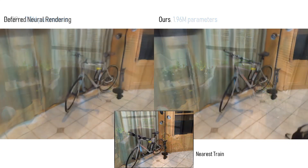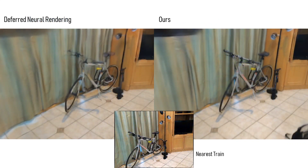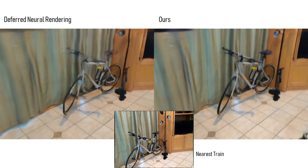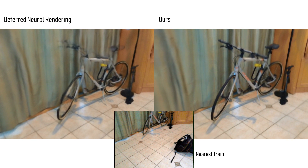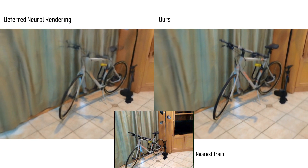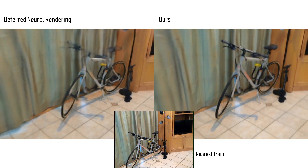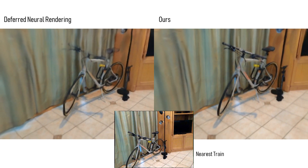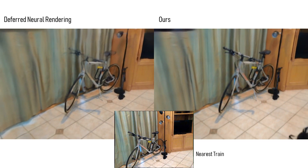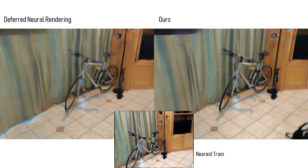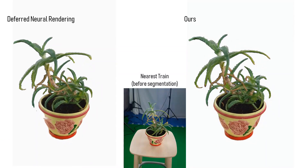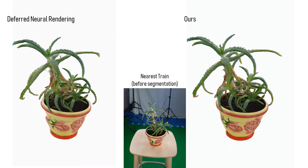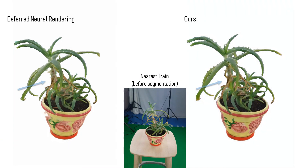Here we compare our method to the deferred neural rendering system, which uses a mesh rather than a point cloud as a geometric proxy. In general, both methods achieve similar results, yet ours performs better wherever meshing fails, for example on thin object parts.